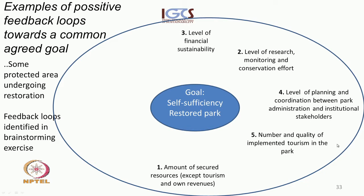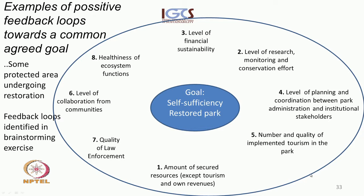The fifth was the number and quality of implemented tourism in the park. The sixth was the level of collaboration from surrounding communities. The seventh was the quality of law enforcement. The eighth was the healthiness of ecosystem functions. We tried to limit this to below ten because adding more feedback loops makes the picture more blurred, doesn't add to understanding, and doesn't simplify the system — and as we'll see, eight is already over the top.